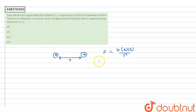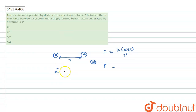For the second case, the force between the proton and the singly ionized helium atom: the ionized helium carries two electron charges, and the proton carries one unit charge. These are separated by a distance of 2r. So F dash equals k times e into 2e divided by the distance 2r.